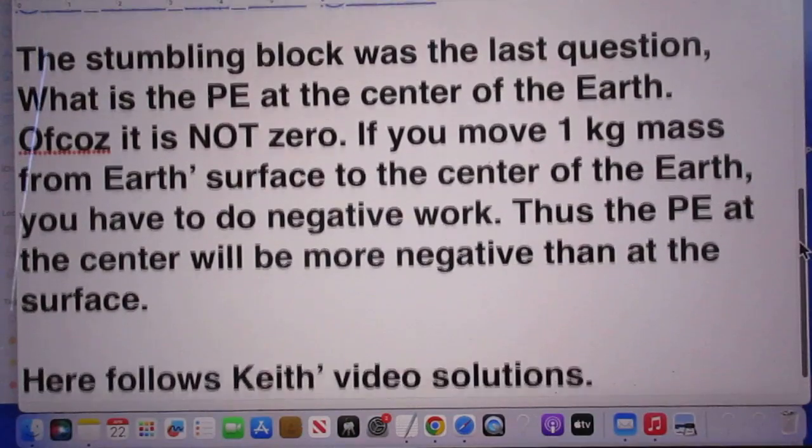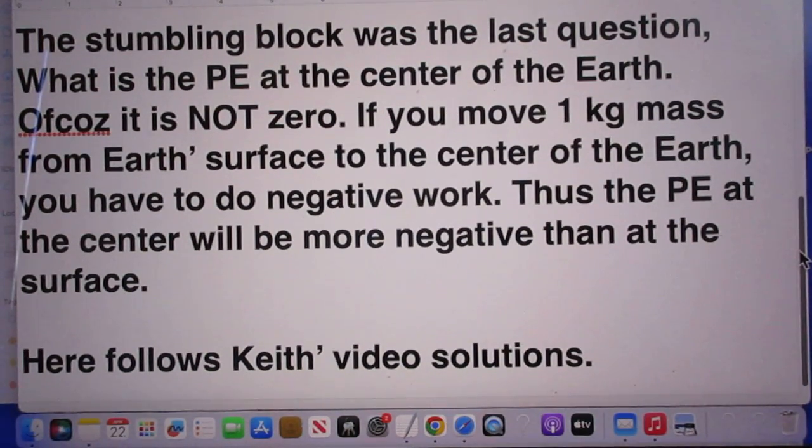The stumbling block was the last question. What is the potential energy at the center of the earth for an object with mass one kilogram? Of course, it is not zero. Many of you have zero. If you move one kilogram mass from the earth's surface to the center of the earth, you have to do negative work because the earth is pulling on you. Thus, the potential energy at the center will be more negative than at the surface.